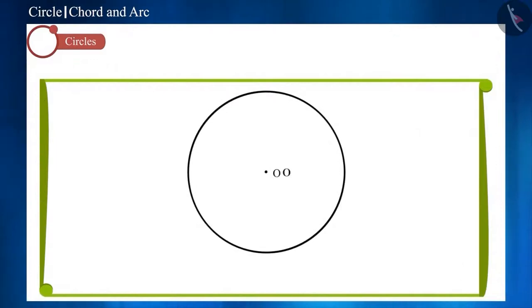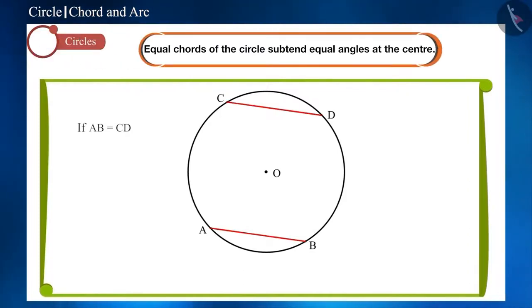If we make two equal chords in a circle, then we know that the equal chords of the circle subtend equal angles at the center. This means, in the figure, angle AOB and angle COD will be equal.